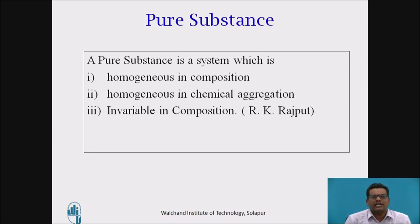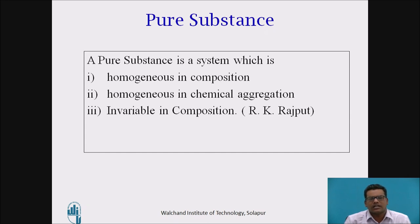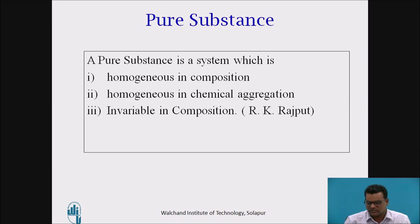Invariable in composition means: taking the same example of a mixture of water and steam, this can be considered as a pure substance. But if after some particular period of time that steam converts into a mixture of hydrogen and oxygen, that is not going to be considered as a pure substance. If these three conditions are satisfied, then such a system is called a pure substance.